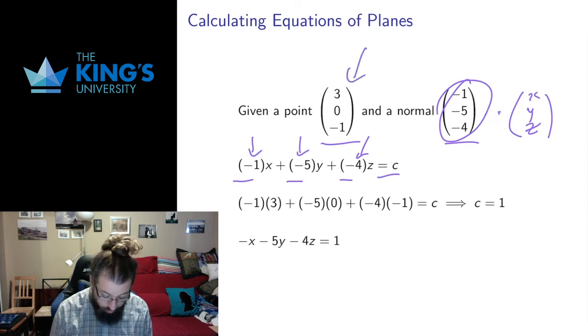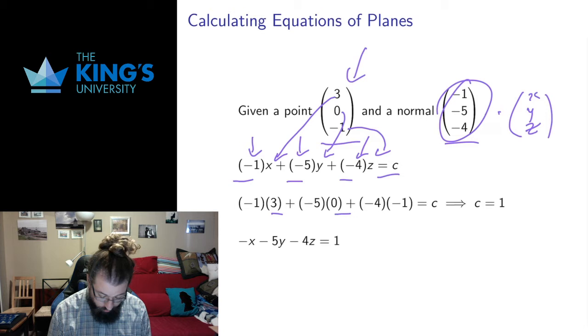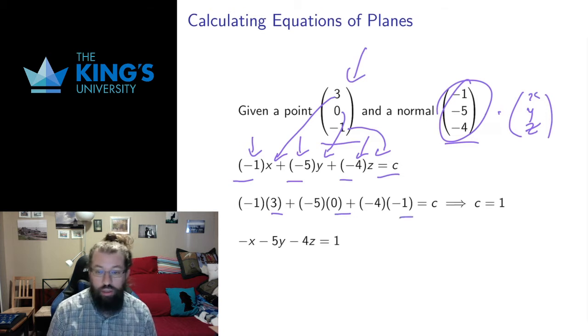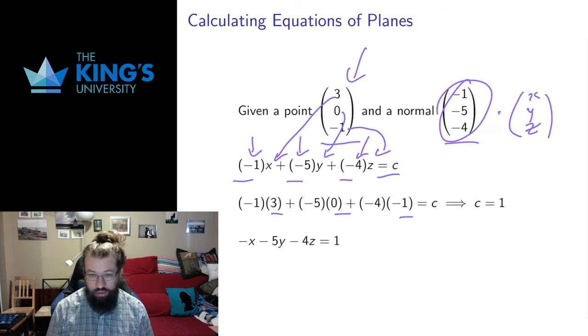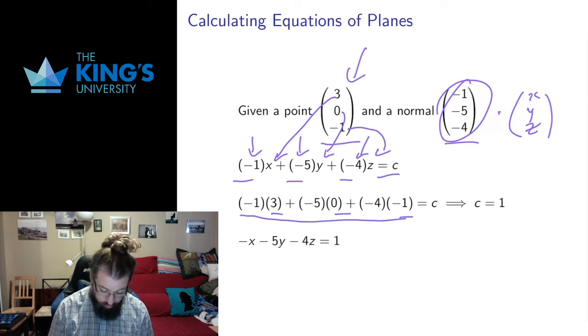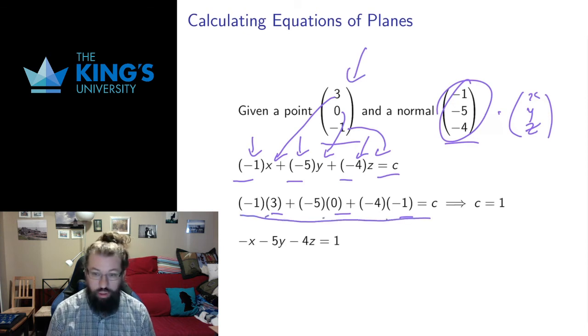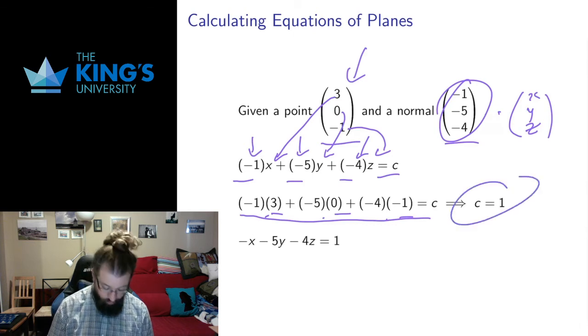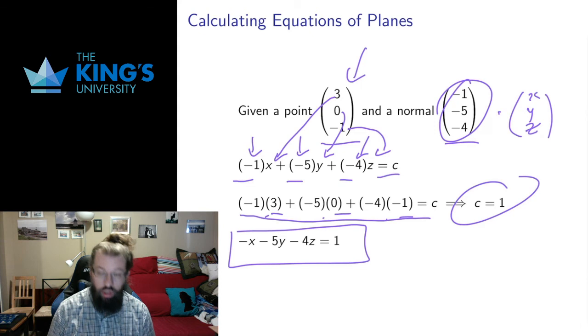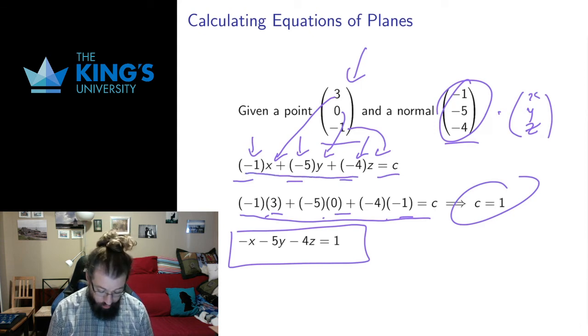I get the constant c from using the point. So now I'm going to put the point in for the coordinates, three for x, zero for y, negative one for z, right there. And that turns the left side entirely into numbers, and the right side is still c, so I just do this calculation. In this case, I get negative three plus zero plus positive four, that gives me one, and that tells me that the constant should be one. And then that lets me finish the equation of the plane.